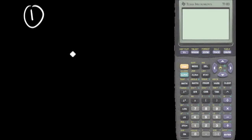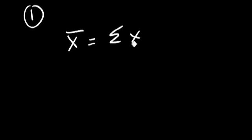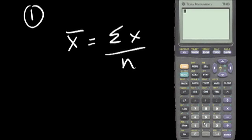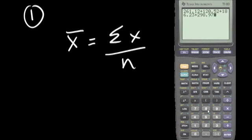So let's use our calculator to enter the values, because to compute a mean for a sample, we need to add the data and divide by the sample size. Let's enter the data: 261.12 plus 120.52 plus 186.23 plus 298.97, plus 271.55 plus 263.96.